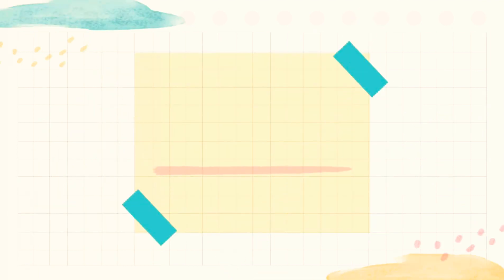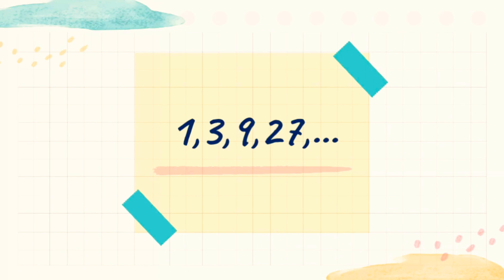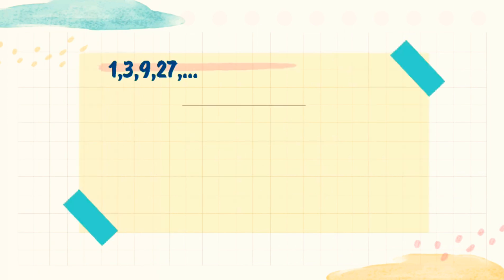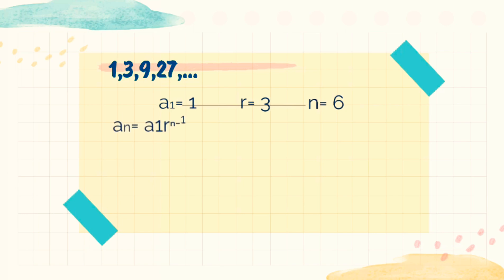One example of geometric sequence is 1, 3, 9, 27, and so on. But we are required to find the 6th term. In order to find the 6th term, we shall find a sub 1, which is 1, the common ratio of the given sequence, which is 3, and the nth term, which is 6. With the formula given to us, we should substitute the first term, the common ratio, and the nth term.